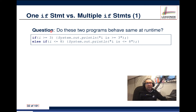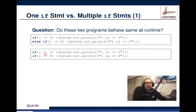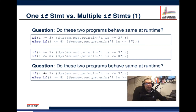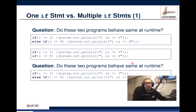Now, do these two code blocks behave the same at runtime? Case A: if i is greater than or equal to 3 print this, else if i is less than or equal to 8 print that. Case B: if i is greater than or equal to 3 print this, if i is less than or equal to 8 print that — the only difference being the else keyword. Also consider the variant where the conditions are i less than or equal to 3 and i greater than or equal to 8.